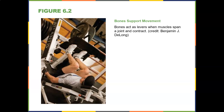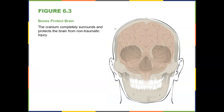Bones act as levers when muscles span a joint and contract. We'll talk about first, second, and third-class levers when we get into the muscular system, but just remember that bones act as levers. The bones also protect the brain — the cranium completely surrounds and protects the brain from non-traumatic injury.